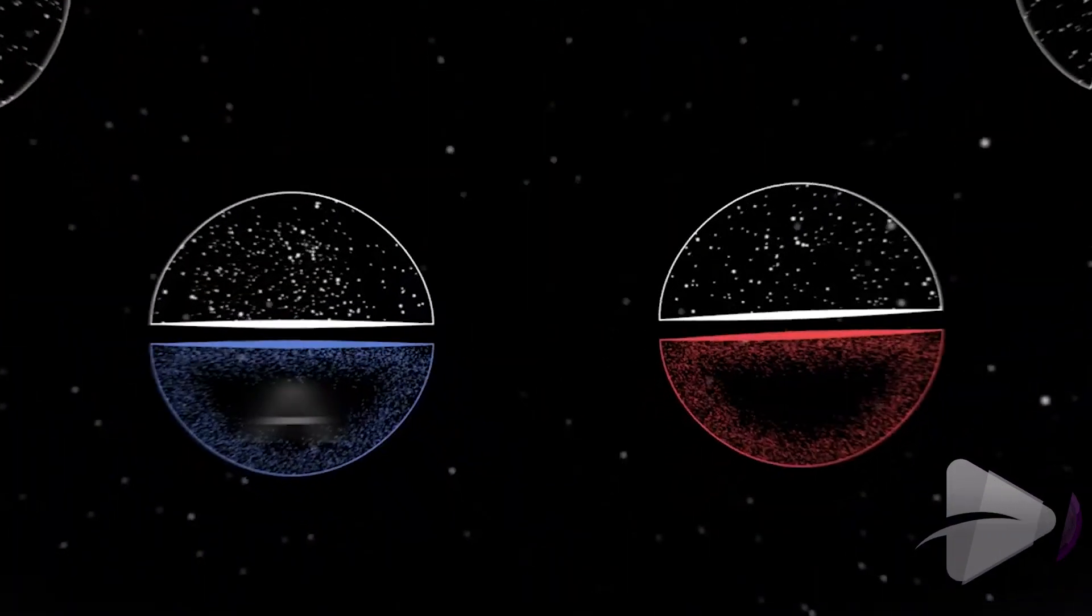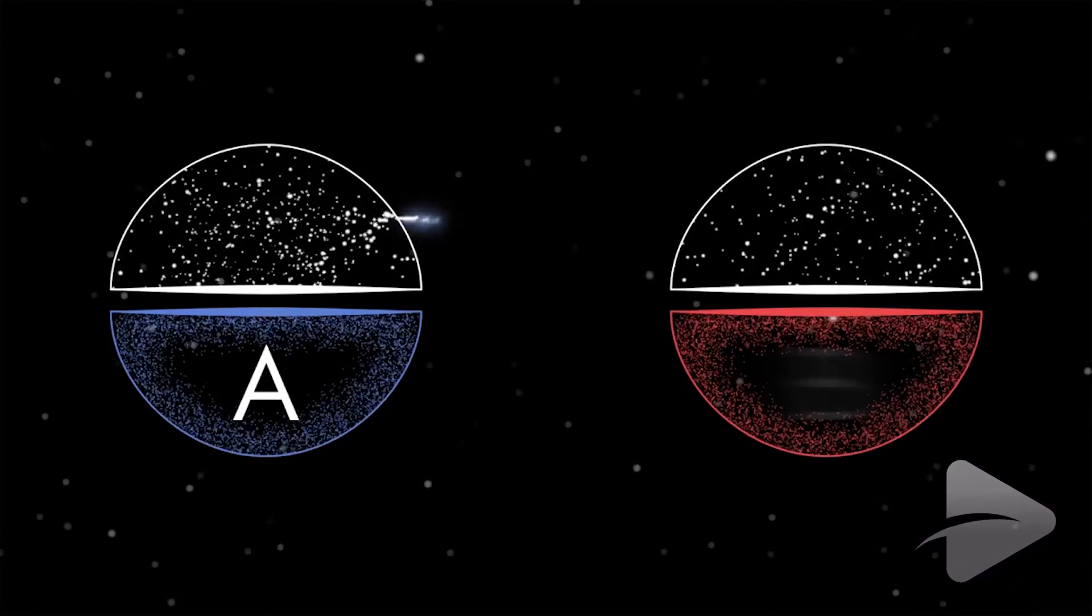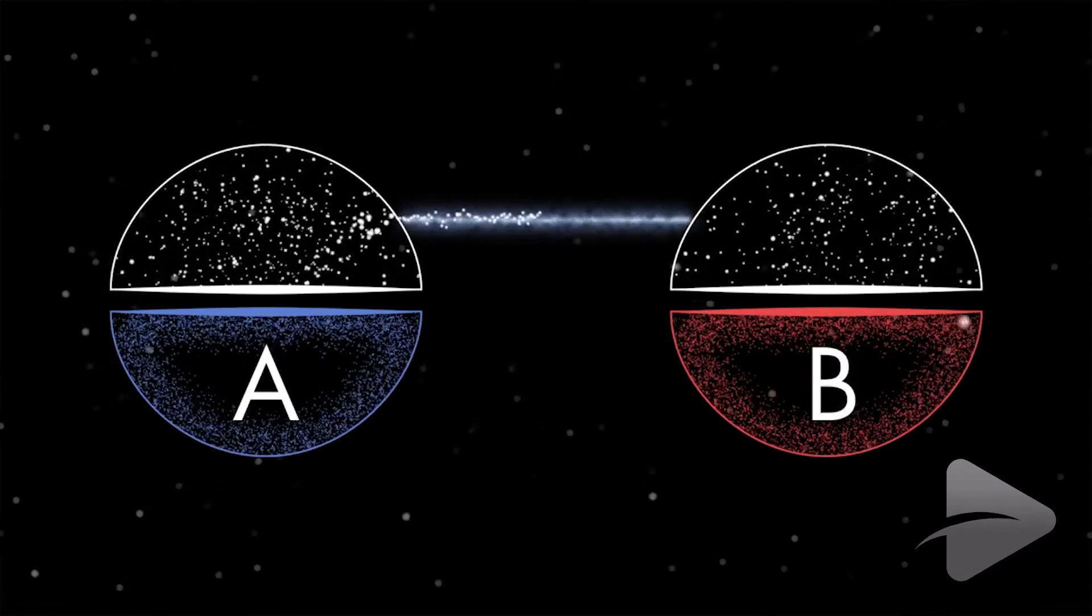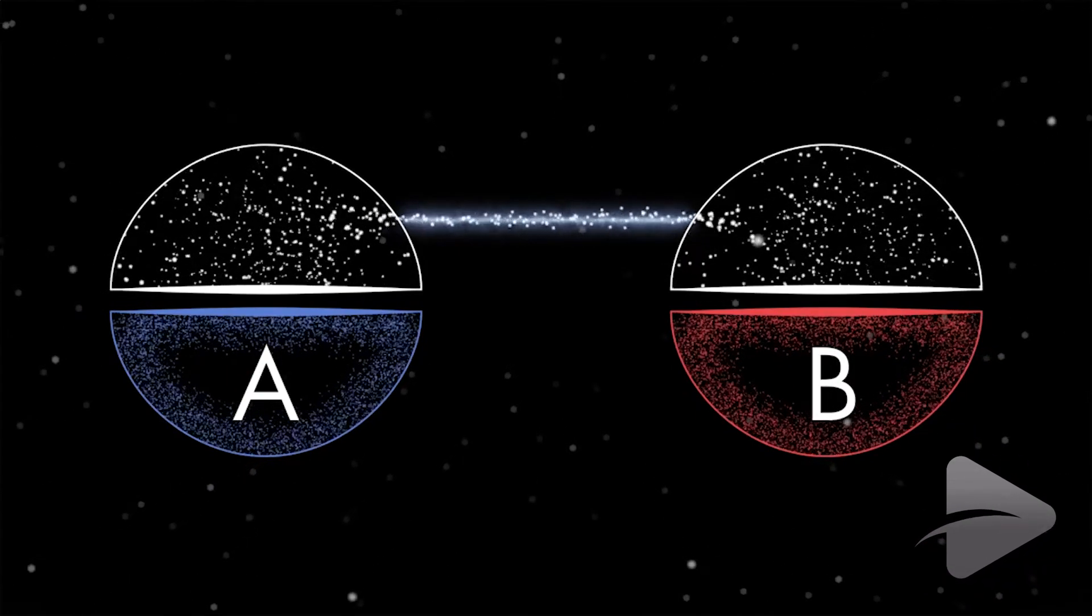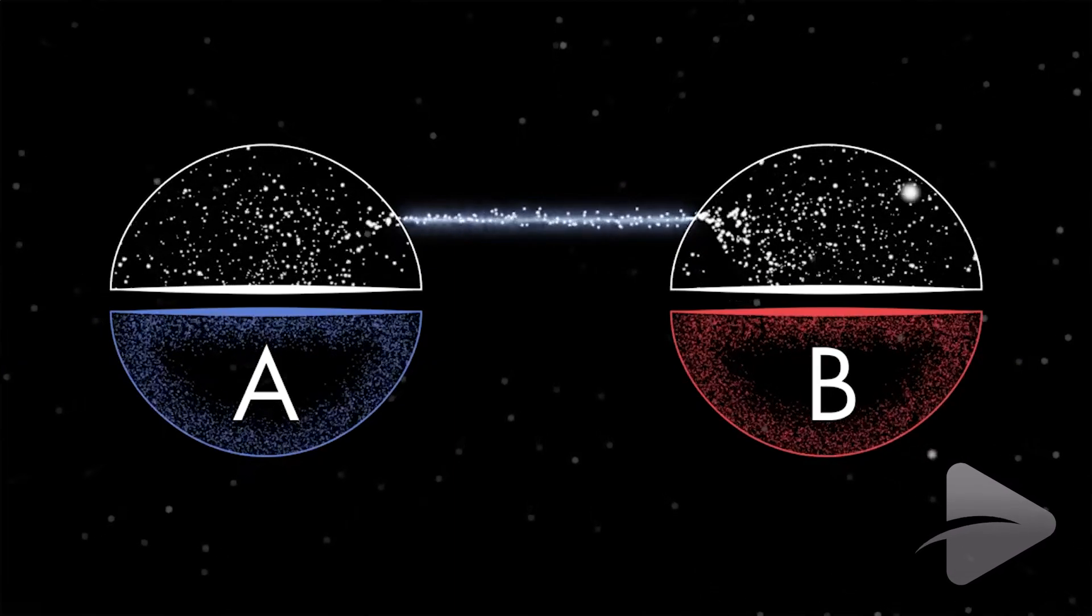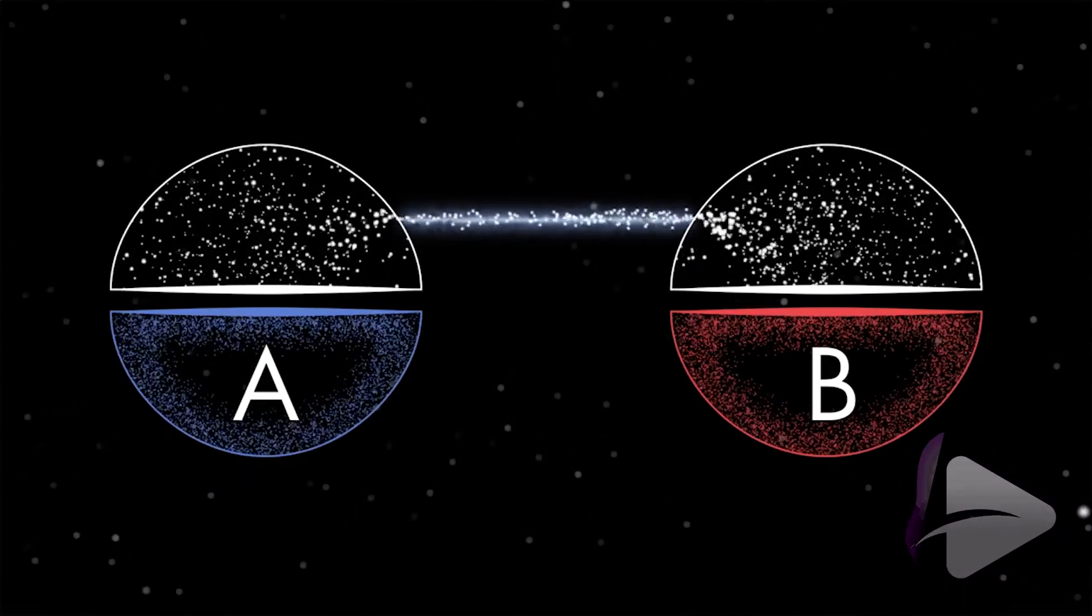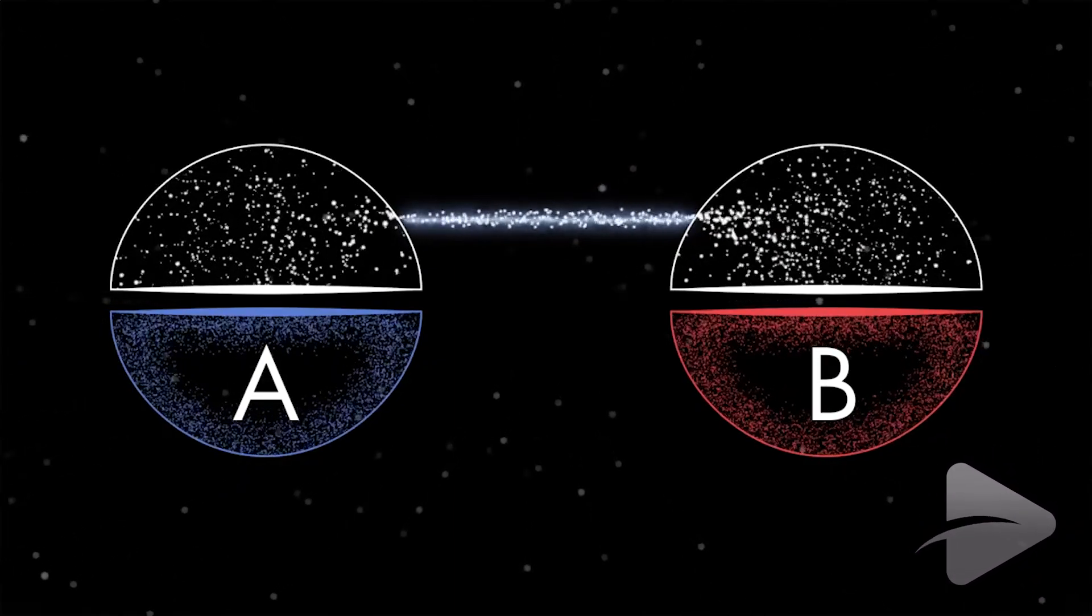If you want to use token A as collateral to borrow token B, you move the bridge asset between Silo pools, similar to Uniswap's trading pools. Therefore, the only risk in pool B is ETH, not token A.